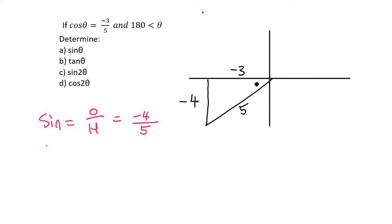Question B: tan theta. We know that tan is opposite over adjacent. So that's going to be negative 4 over the adjacent which is negative 3. The negatives cancel and you end up with 4 over 3.